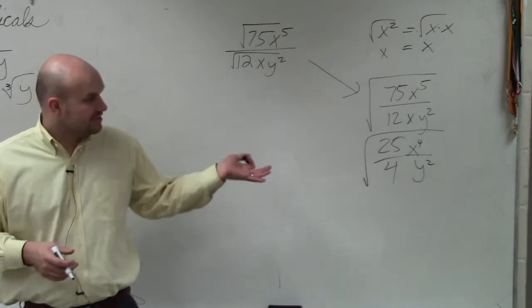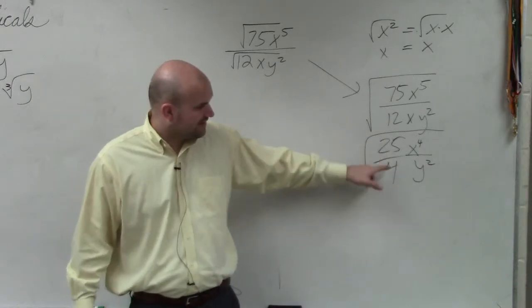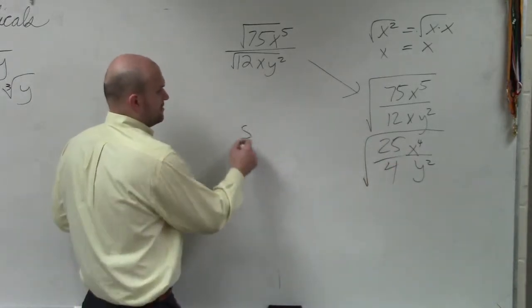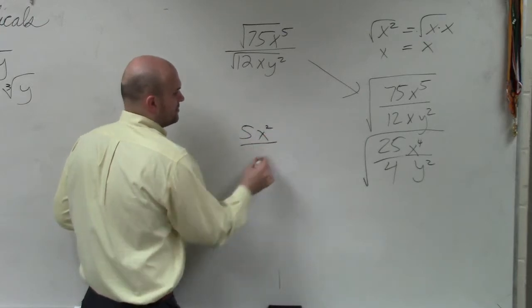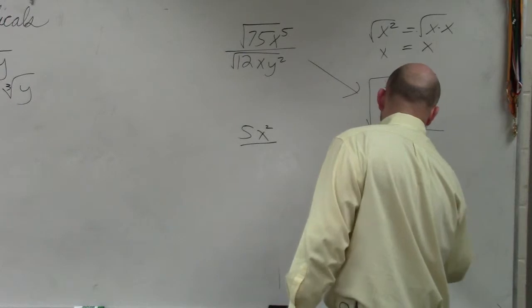Now you guys can see you can take the square root of all of these terms. We take the square root of 25, 4, x to the fourth, and y squared. And so what you're left is 5x squared over 2y.